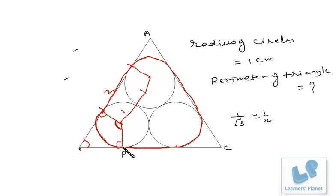This arc will be one-third because this angle is 120 degrees. So this is one-third, this is one-third, and this is one-third. Three one-thirds means one full circle. So this length plus this length plus this length will be one full circle. So that is 2πr.